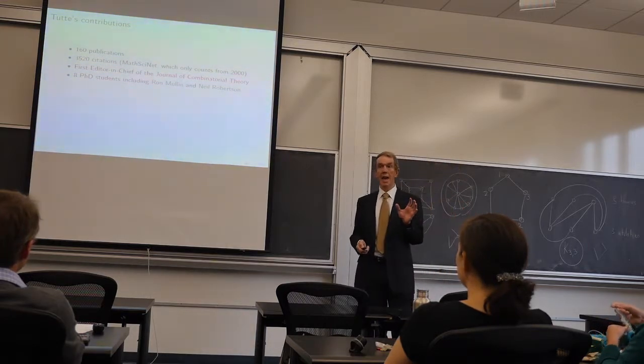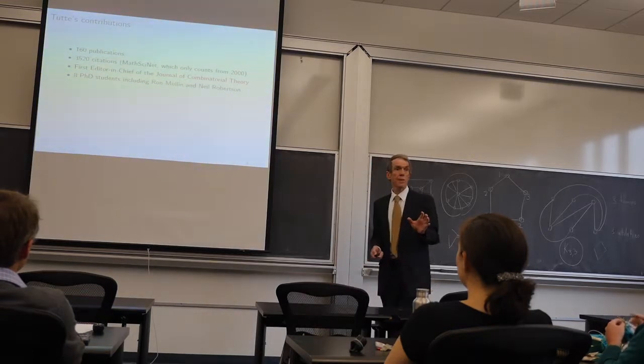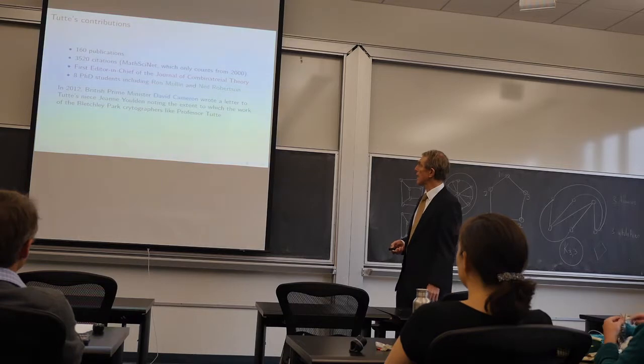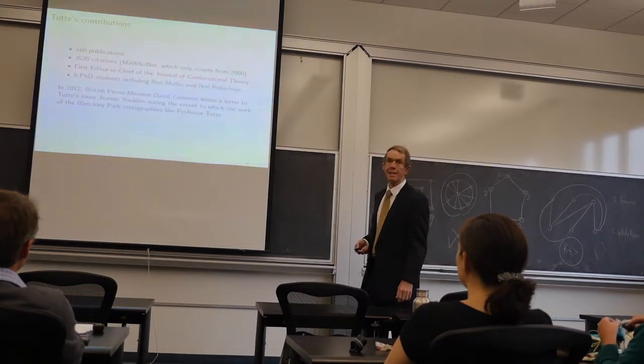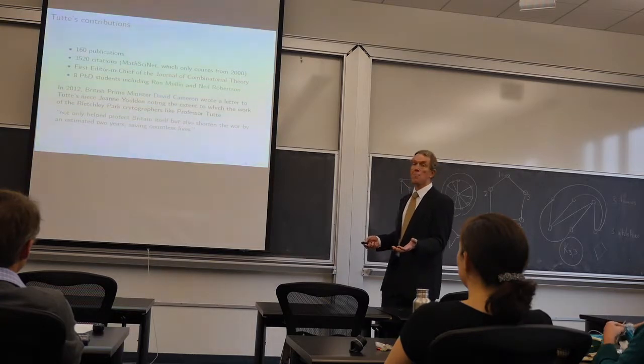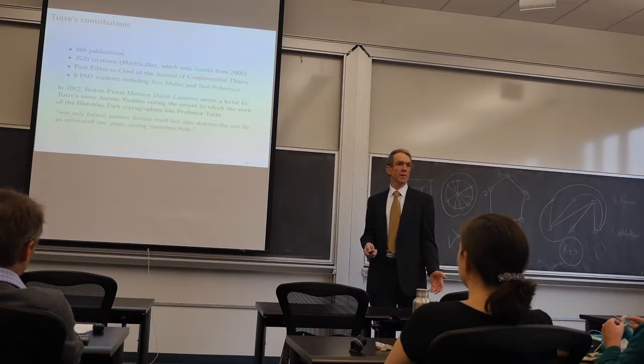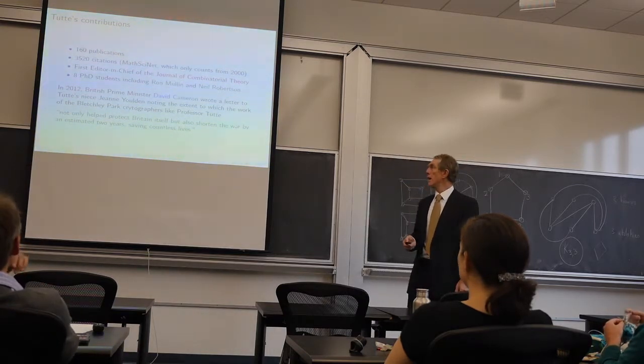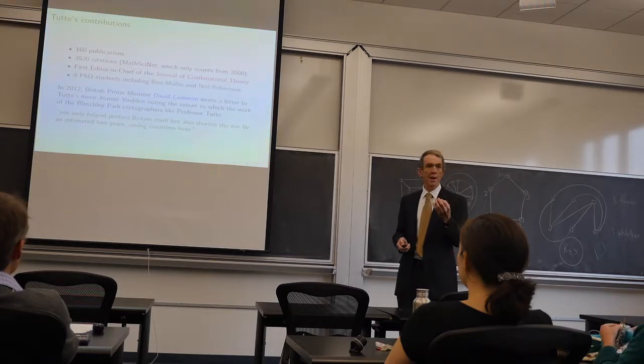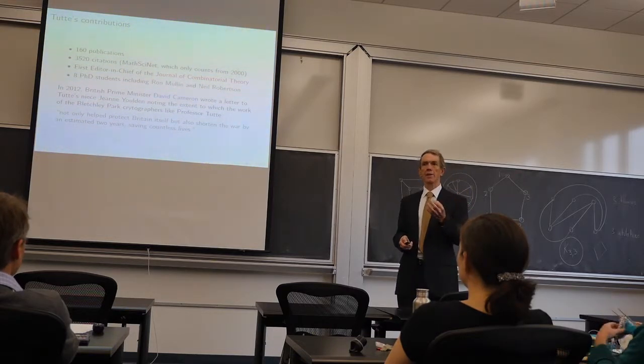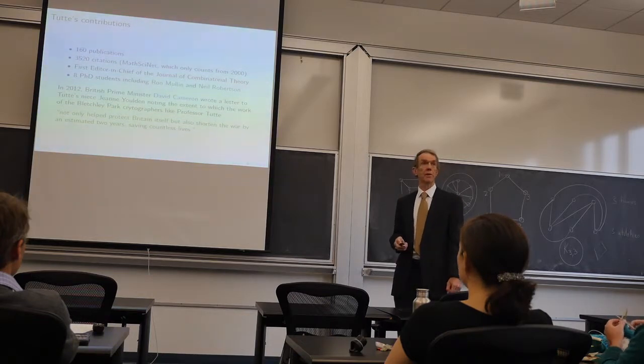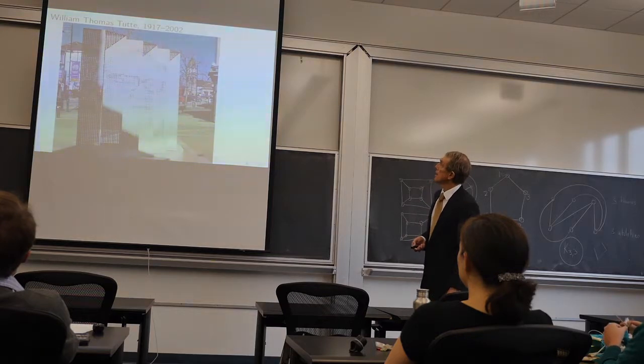He was the first editor-in-chief of the Journal of Combinatorial Theory, which is the most famous discrete mathematics journal. It was founded in 1967. And he had eight PhD students. Some of you will know the names of Ron Mullin and Neil Robertson. And his work at Bletchley Park. The British Prime Minister, David Cameron, wrote a letter to his niece. He had no children. But David Cameron wrote a letter to Jean Yulden, who was Tutte's niece in 2012.